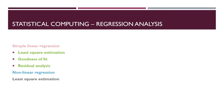Regression analysis is a statistical technique for modeling and investigating the relationship between two or more variables. For example, regression can build a model expressing yield as a function of temperature, used to predict yield at a given temperature or for process optimization. In simple linear regression, we determine the relationship between a single regressor variable x (independent variable) and a response variable y (dependent variable).